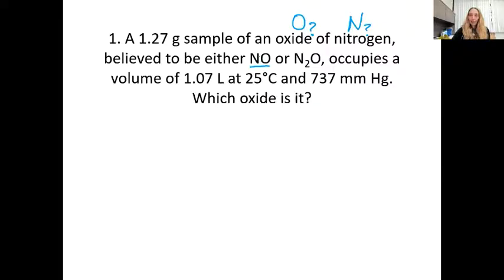Now I know I can calculate molar masses of these using the periodic table. So NO has a molar mass of 30 grams per mole, and N2O has a molar mass of 44 grams per mole. So I want to keep that in mind. This 1.27 gram sample that we weigh occupies a volume of 1.07 liters at 25 degrees Celsius and 737 millimeters of mercury. Which oxide is it?